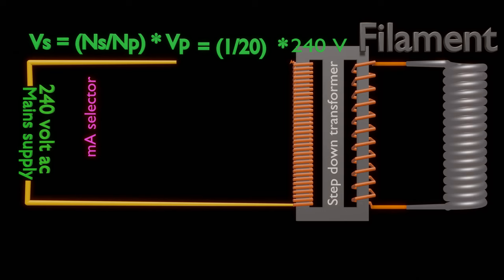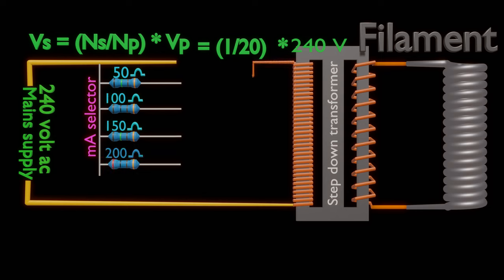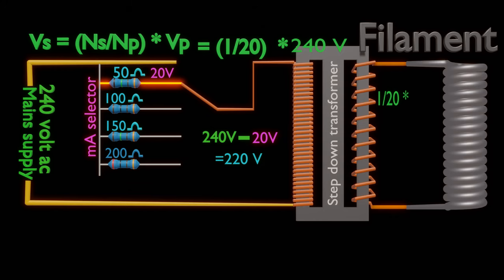MA selector usually consists of a bank of resistors. Each resistor in the bank has a fixed value of resistance. Let's consider when 50 ohm resistor is switched. Now this resistor is connected in series with primary of step-down transformer. Let there be a voltage drop of 20 volts across the resistor. The voltage available across the primary winding will be 240 volts minus 20 volts. Voltage across secondary winding will be turn ratio 1 by 20 multiplied by 220 volts. We get a voltage of 11 volts to filament, which may help a current of say 7.3 ampere. We have changed our filament current by use of a resistor.